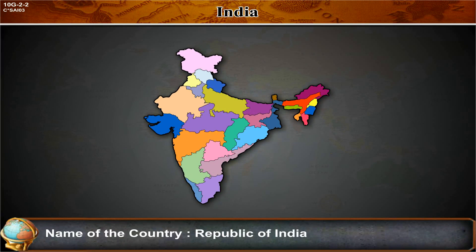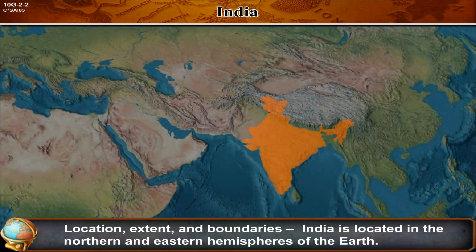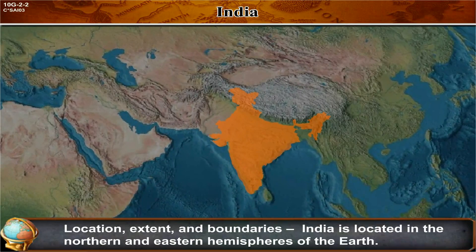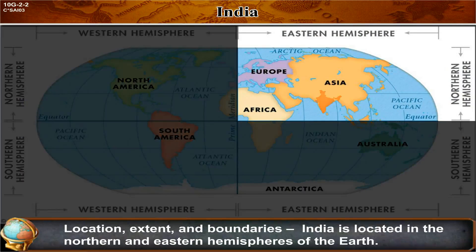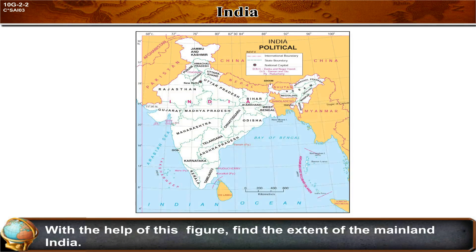Name of the country: the Republic of India. Name of the capital: New Delhi. Location, extent, and boundaries — India is located in the northern and eastern hemispheres of the earth. It is located in the southern part of the Asian continent.